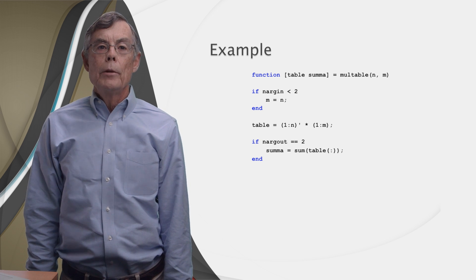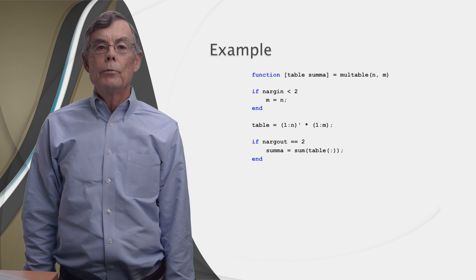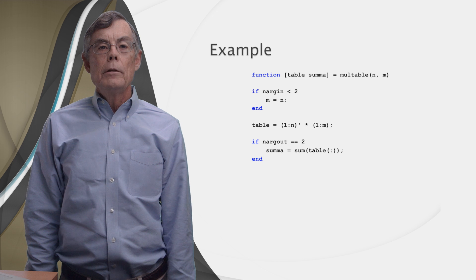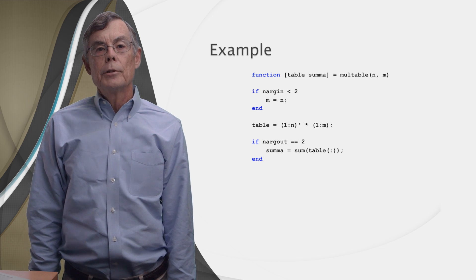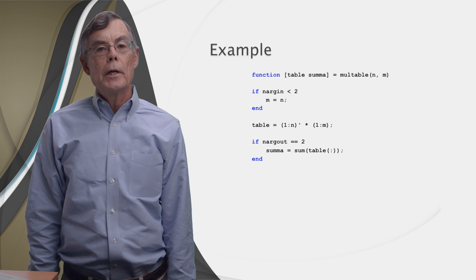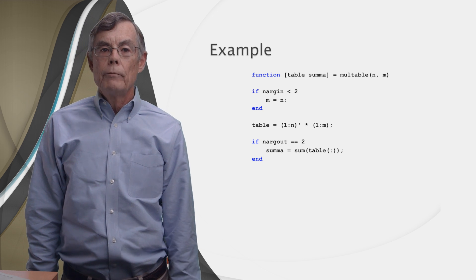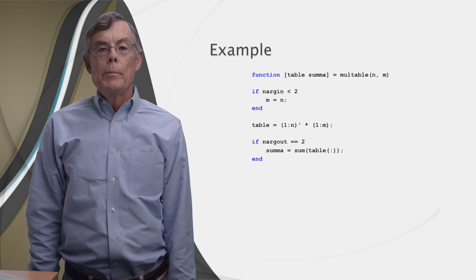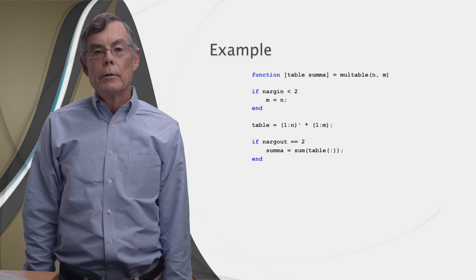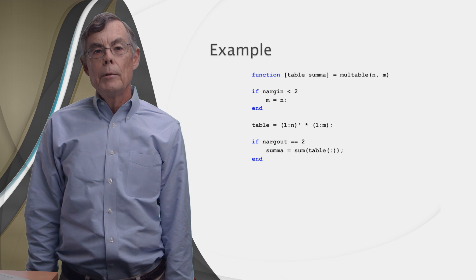Now it's time to determine whether we need to compute the sum of the matrix as well. We need to do that only if the user requested a second output argument. So we check nargout. If it's two, we call the sum function. Remember that sum computes the sums of the columns of a matrix and returns them in a vector.